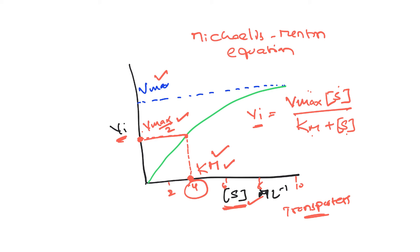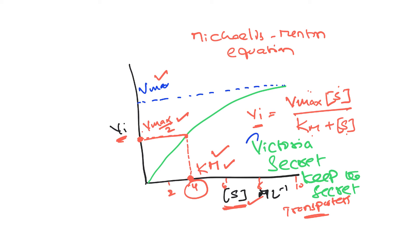One of my previous students made a mnemonic for the Michaelis-Menten equation — 'Victoria's Secret, keep the secret' — representing Vmax times substrate concentration over Km plus substrate concentration. So initial velocity equals Vmax times substrate concentration over Km plus substrate concentration.